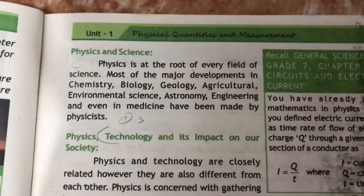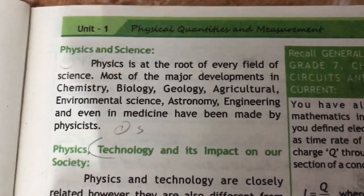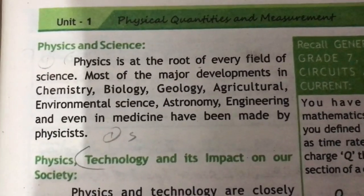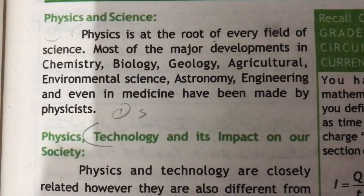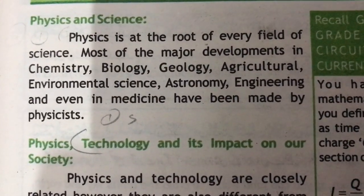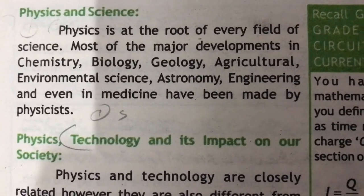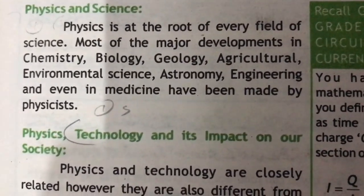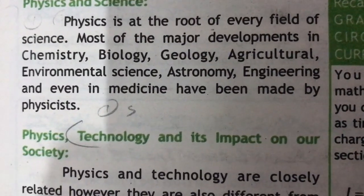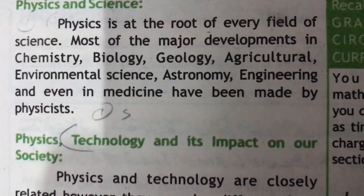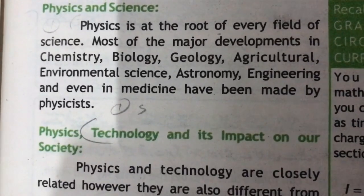Physics and science — what is the relation between them? Physics is at the root of every field of science. Most of the major developments in chemistry, biology, geology, agriculture, environmental science, astronomy, engineering, and even medicine have been made by physicists.